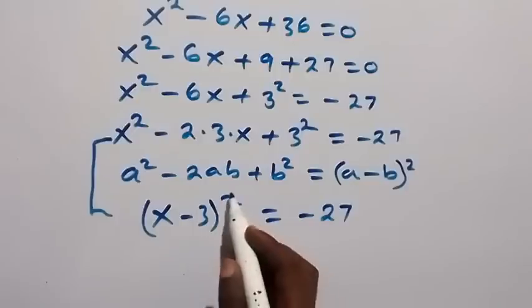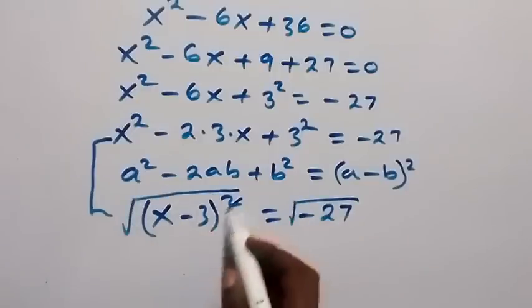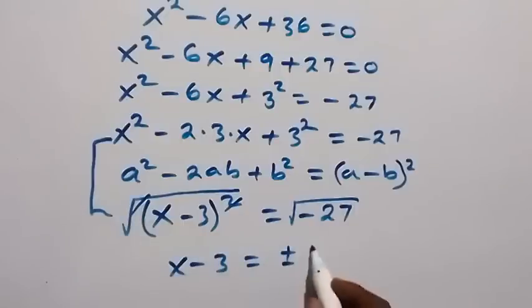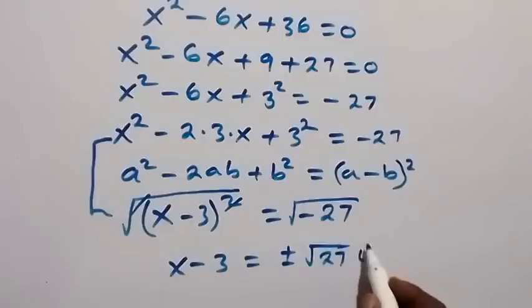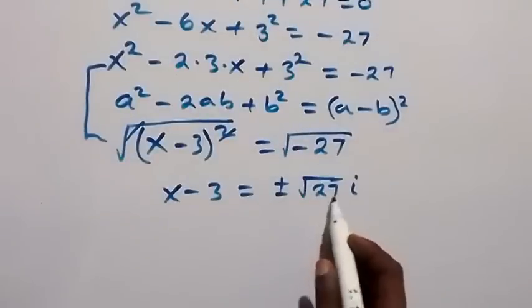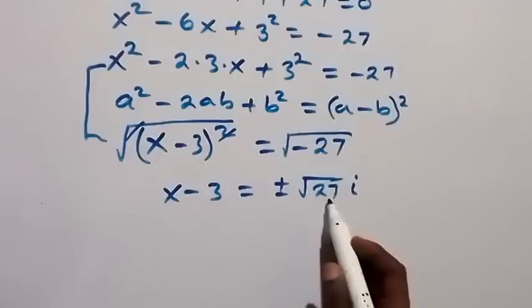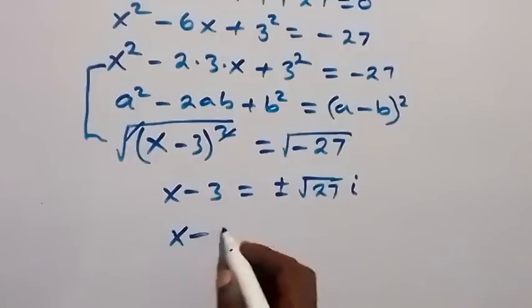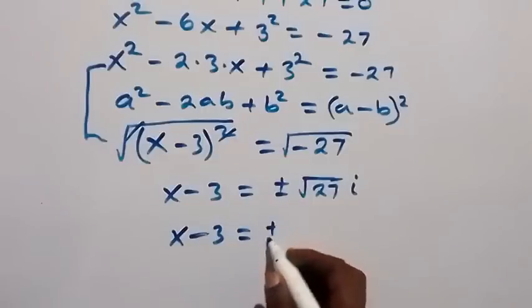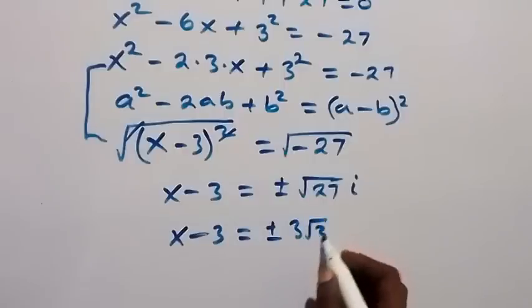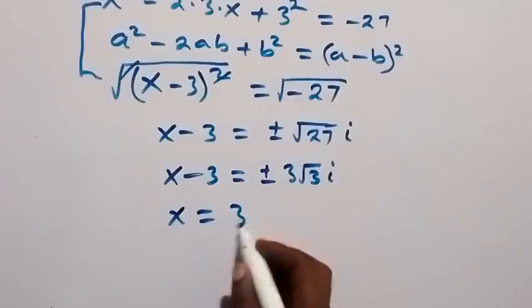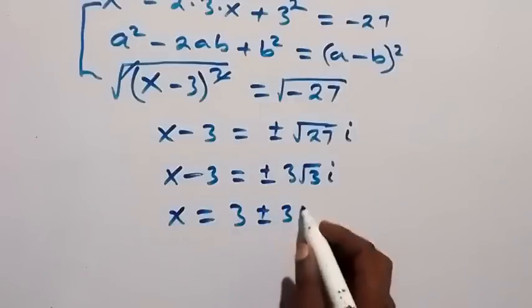So this side now can be written as x minus 3, all squared, then equals to minus 27. And then from here, we can take the square root on both sides. The square root cancels on the left. So we have x minus 3 equals to plus or minus root 27 times i, because square root of minus 1 is i. Then from here, we can write 27 as 9 times 3, and that becomes x minus 3 equals to plus or minus 3 root 3 i. Since we want to find x, let's take minus 3 to this side. So we have x equals to 3 plus or minus 3 root 3 i.